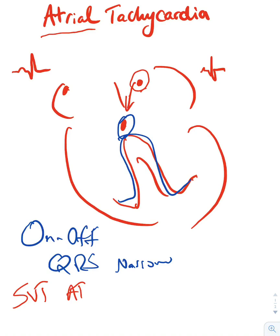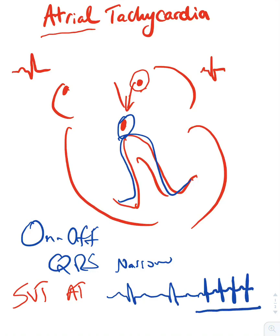On your exam, this might show up as a patient with a normal P wave doing fine, and then all of a sudden having a very short run of a narrow complex tachycardia where the P wave looks different than the usual P wave. If they ask you what this is, you're going to say this is atrial tachycardia.